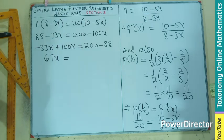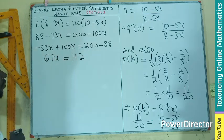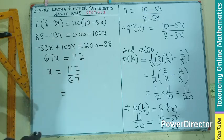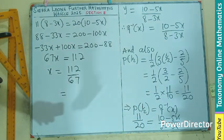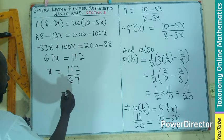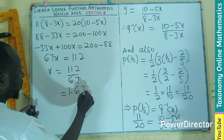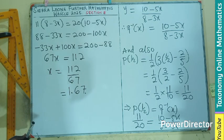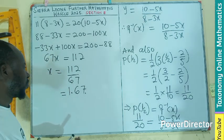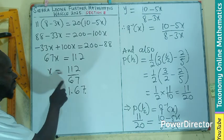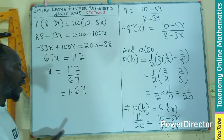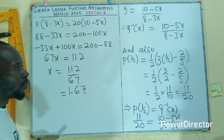If we do this, we have sixty-seven X equals to one hundred and twelve. So your X will be one hundred twelve divided by sixty-seven. So let's check that on our calculator and see the value that we are going to have. So I can have that to be one point six seven to two decimal places. I don't know if we're given how many decimal places. If not, we can leave it in two decimal places. So the value of X is one point six seven. One decimal place will be one point seven. A whole number will be two.